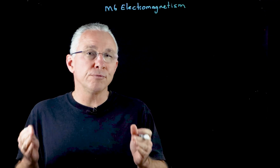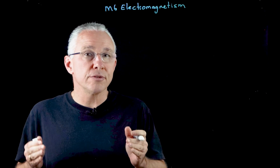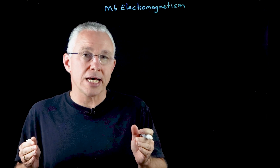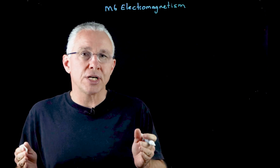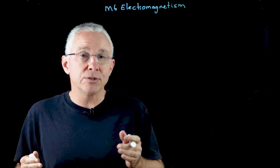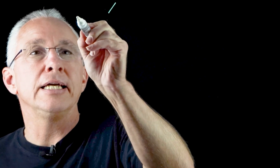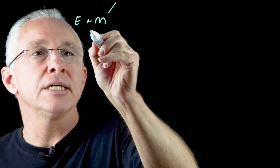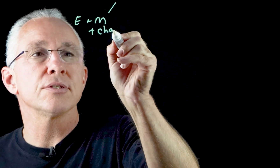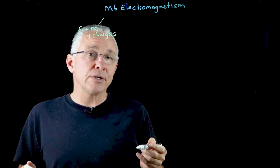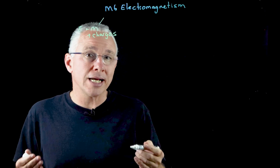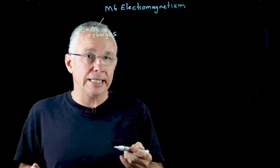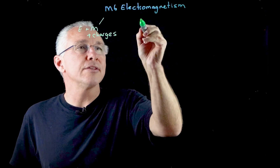The module is divided up into four key inquiry questions. The first deals with charges — specifically, what happens to stationary and moving charges when they interact with electric fields and magnetic fields. The second inquiry question asks under what circumstances is a force produced on a current-bearing conductor in a magnetic field — in essence, the motor effect.